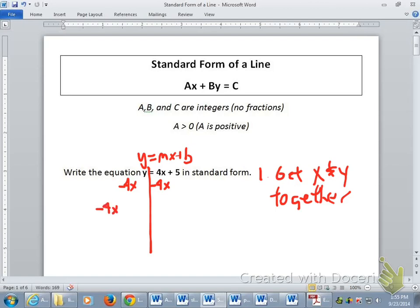So now check out our standard form. Do I have the x and the y together on the same side? Yeah, I do. Now I have to look at my other parts. Do I have all integers? Are all of these integers - negative 4, 1, and 5? Yeah, so that's good. So I have all integers, no fractions.